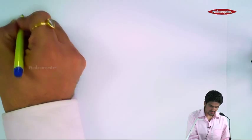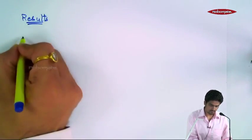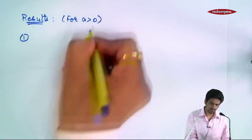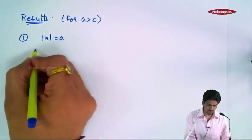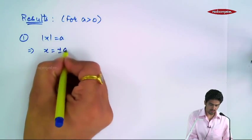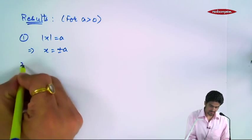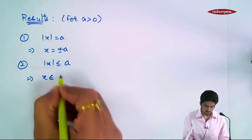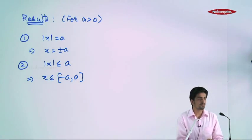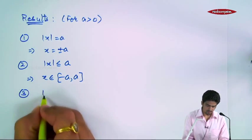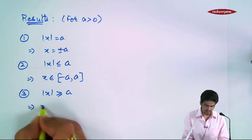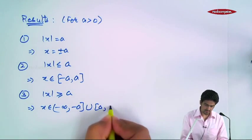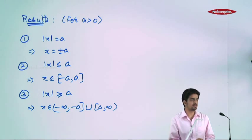Aapne kuch results kiye the iske? Number 1: for a positive, agar mod x equal to a hai, so x will be plus a or minus a. Second, agar mod x less than equal to a hai, then x belongs to minus a to a. Third, if mod x is greater than equal to a, then x is either less than minus a or greater than a. Ye teen results kiye the aapne.